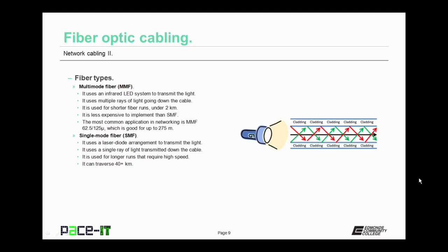Now let's talk about fiber types. There's multi-mode fiber, which uses an infrared LED system to transmit light down the fiber. It sends multiple rays of light down the cable at the same time. It is used for shorter fiber runs under two kilometers, and it is less expensive than the other type. Then we have single-mode fiber, SMF. It uses a laser diode arrangement to transmit light down the fiber, and it only sends a single ray of light down the cable. Even though a diagram may depict it as going straight, it still bounces down the cladding. It's used for longer runs that require high speed and can span more than 40 kilometers.